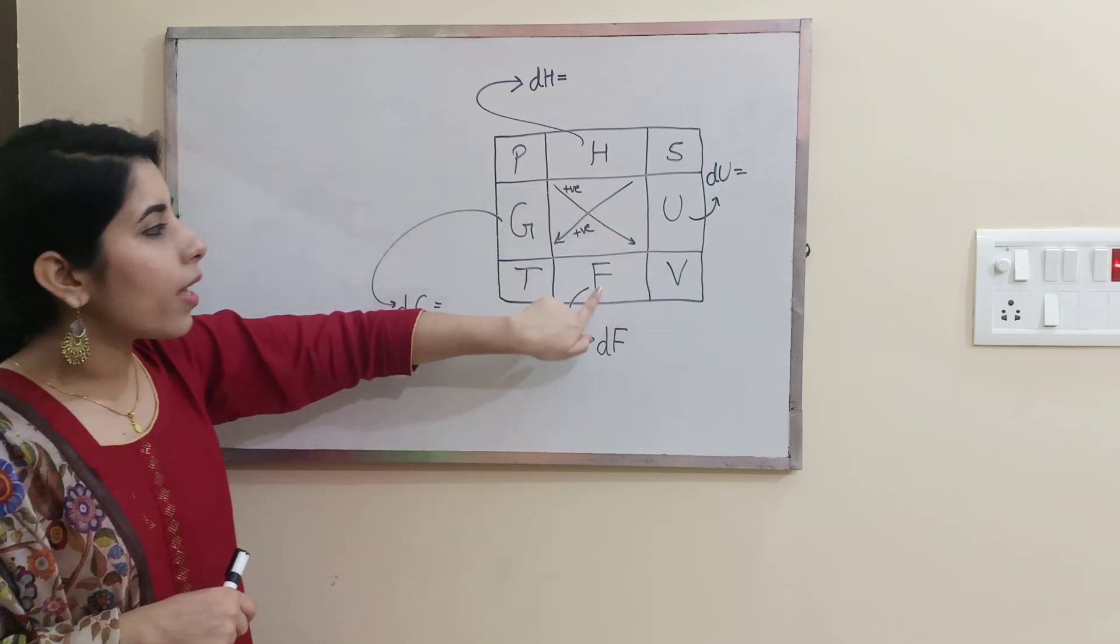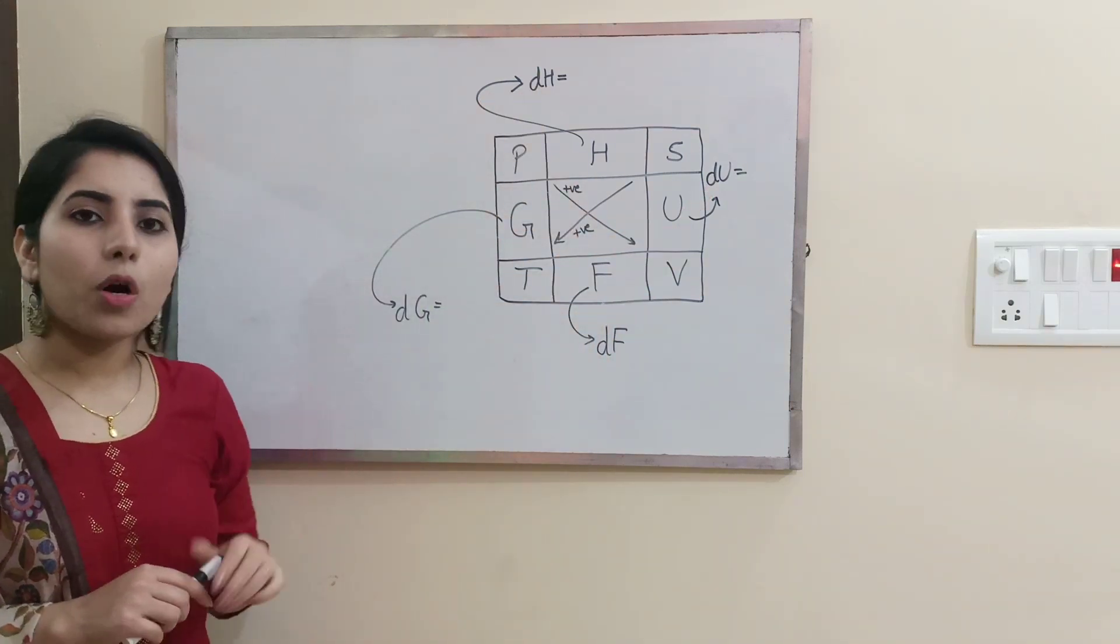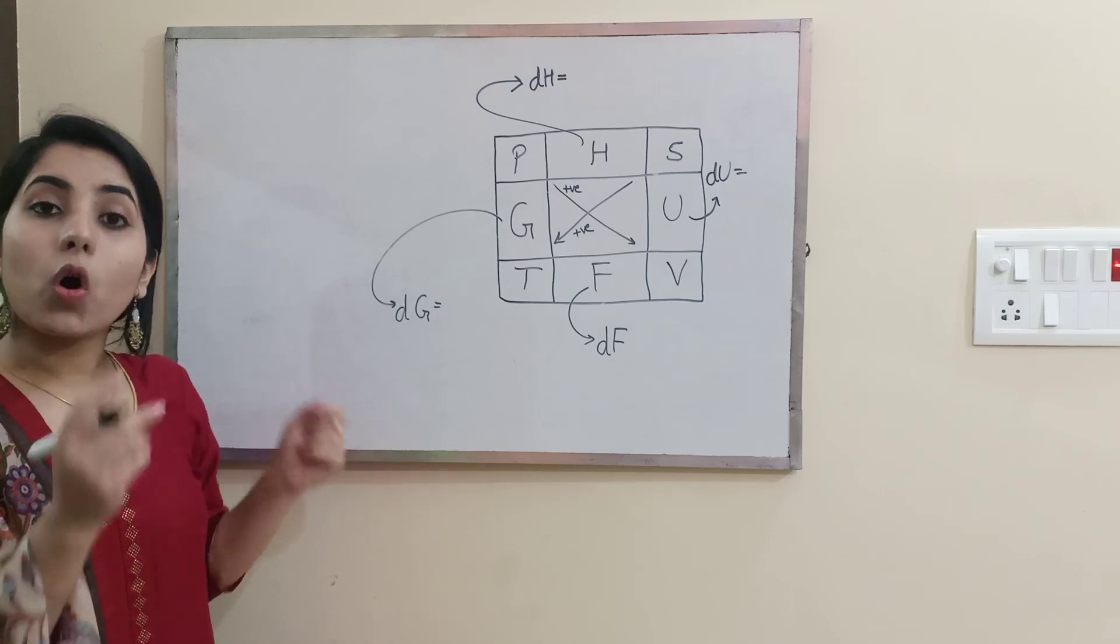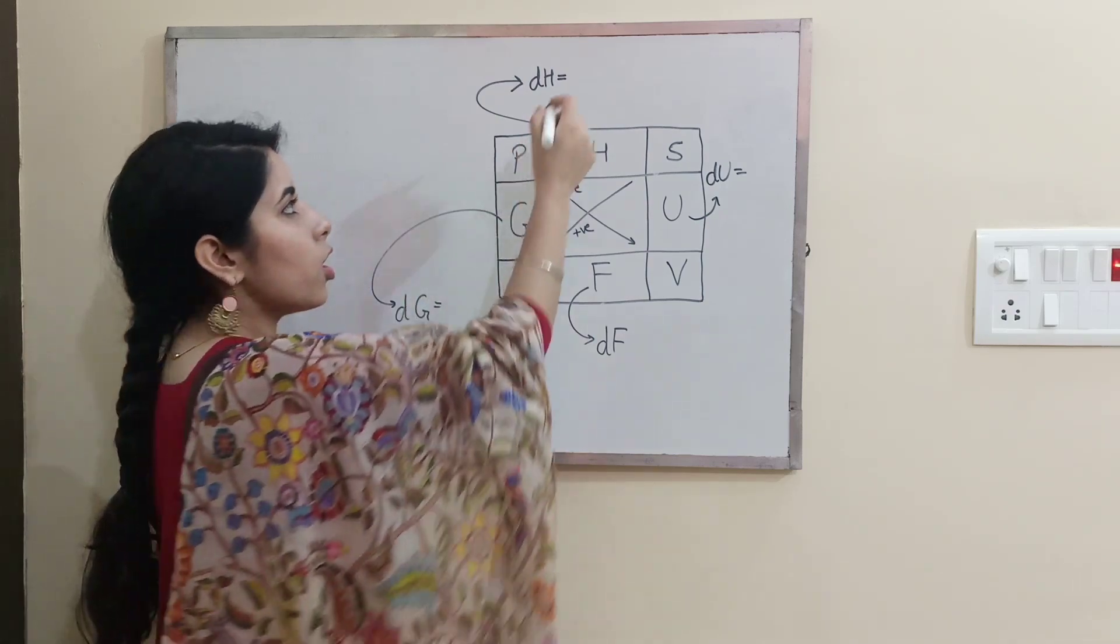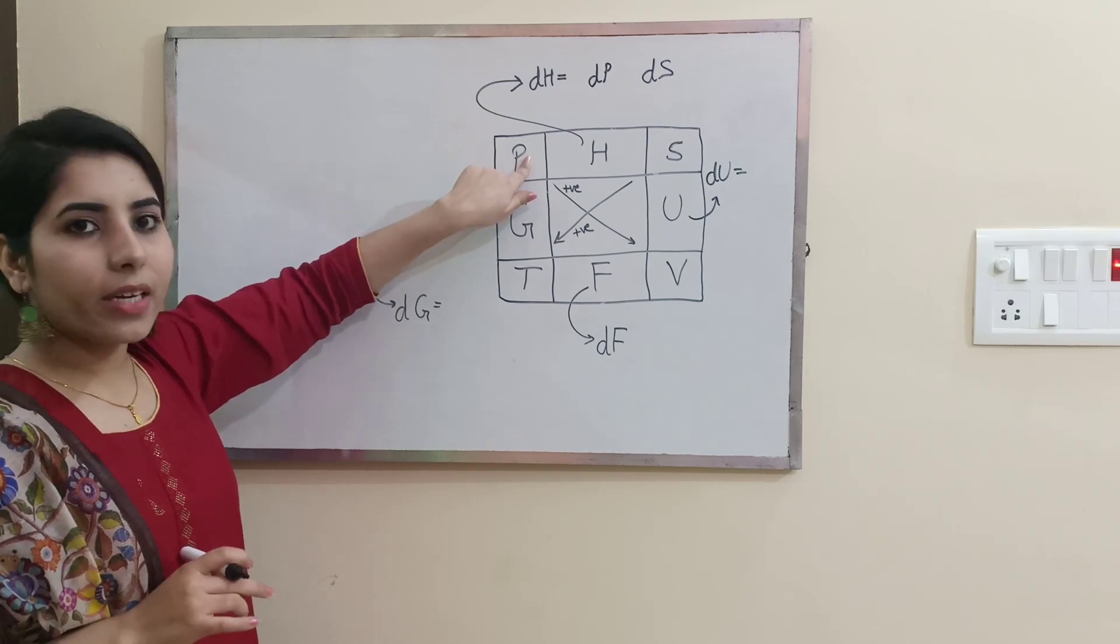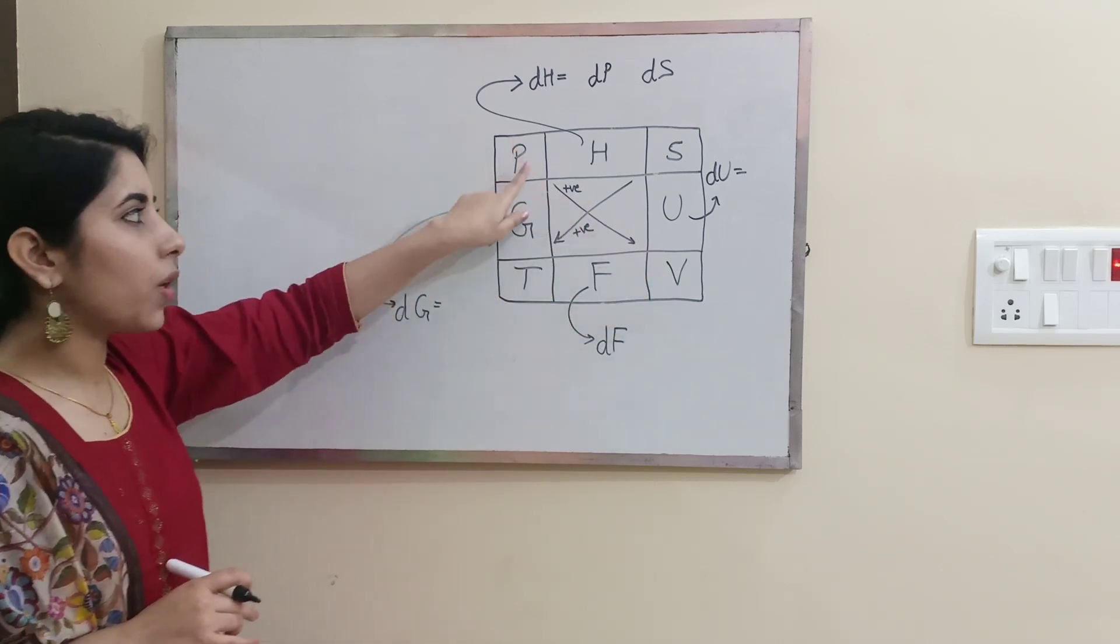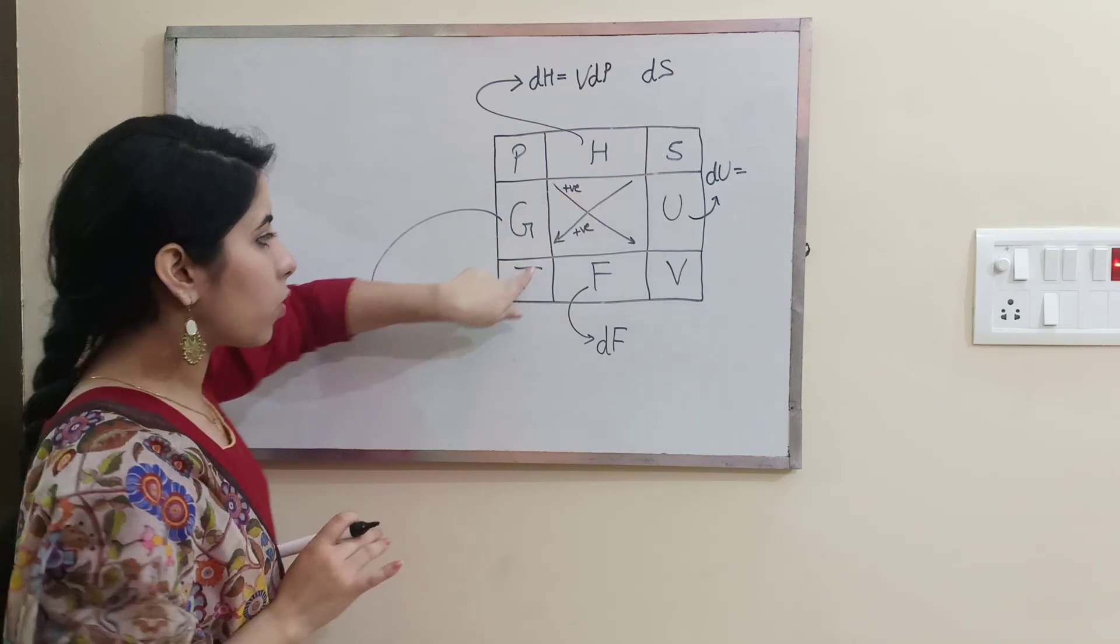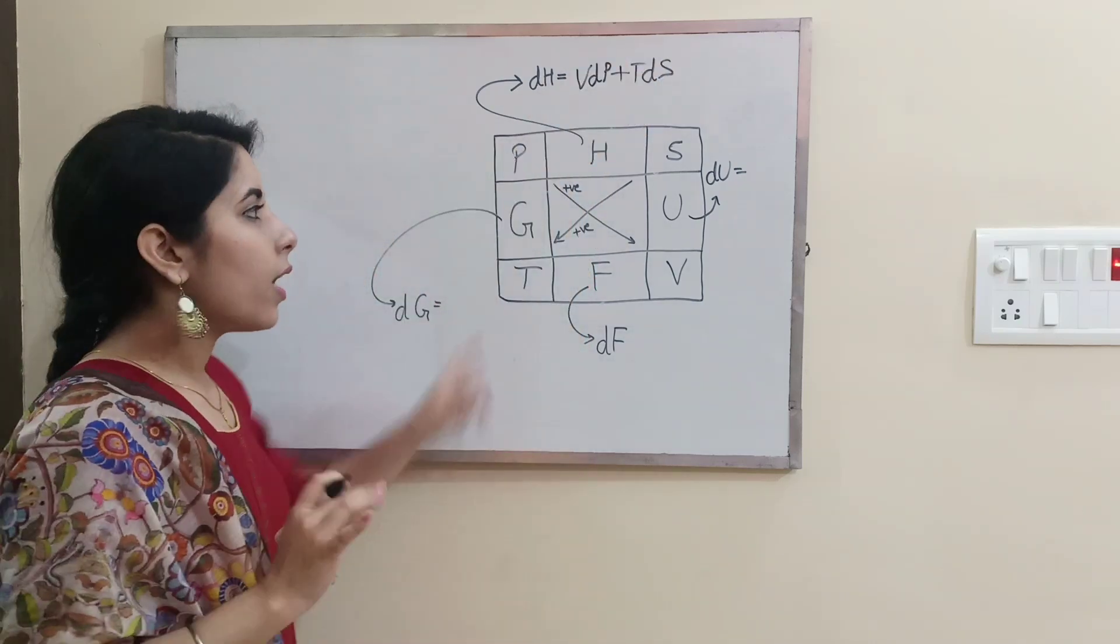Like h, u, f, g - you can write the expressions for them: dh, du, df, and dg. Let's write the formula for them. What are the neighbors of h? P and s. Let's write them also in same form - dp, ds which are the neighbors of h. Now you need to move diagonally in the opposite direction. dp and v is there, and we are moving from up to down, so it's going to be v dp positive, plus t ds. That's the formula.